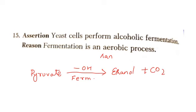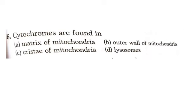Let us see another question on this chapter. Cytochromes are found in which of the following? Matrix, outer wall of mitochondria, Cristae of mitochondria, or lysosomes? The answer is option C, Cristae of mitochondria.